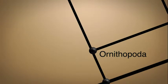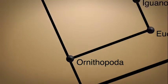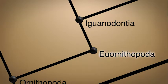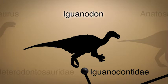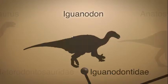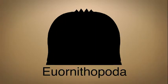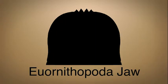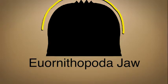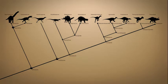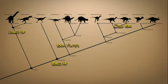The next group on our cladogram is the Ornithopoda, which includes the well-known Iguanodon. Ornithopoda have lower jaws that are more rounded. Remember, each node on the cladogram represents the presence or absence of specific characters that make that group of dinosaurs different from the previous ones.